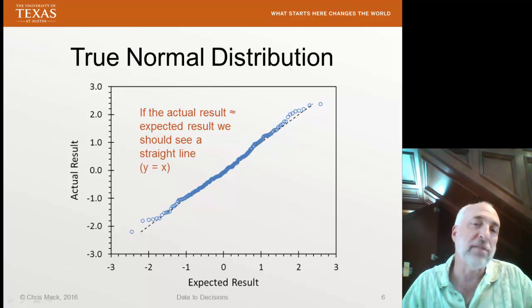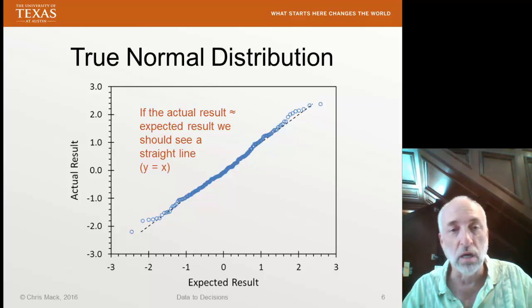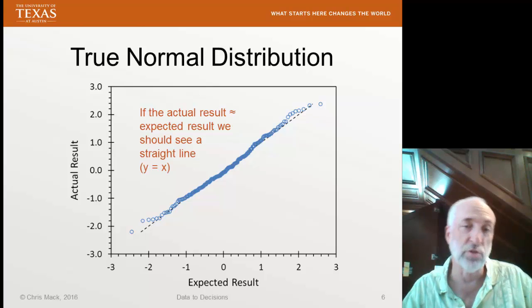But if we get something that sort of looks like a straight line, we start feeling, oh yeah, this might be close to a normal distribution.